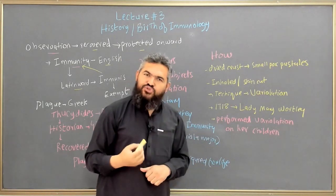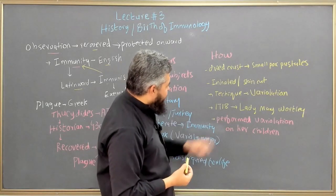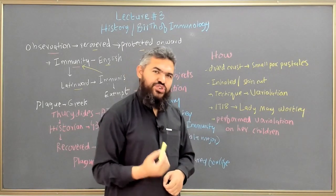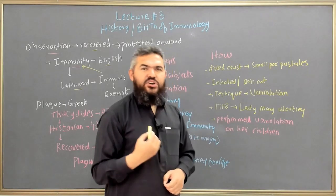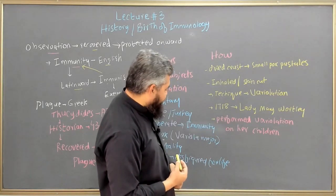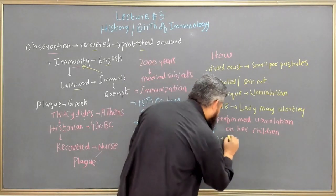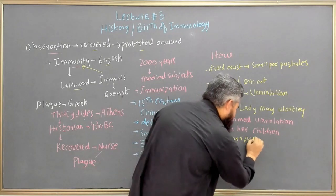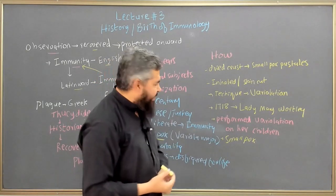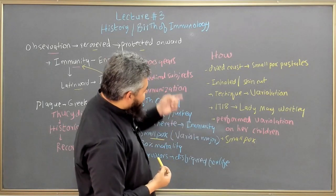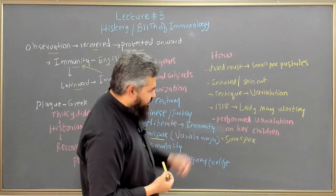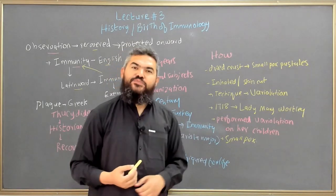This process was so effective that in 1718, Lady Mary Wortley Montagu, wife of the British ambassador to Turkey, was so impressed by the technique of variolation and its effectiveness that she performed variolation on her own children to protect them from smallpox. This was one of the first significant scientific achievements in the subject of immunology.